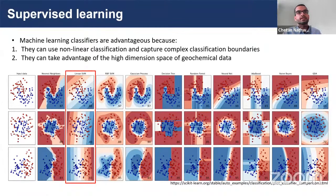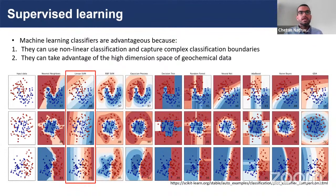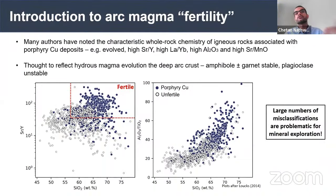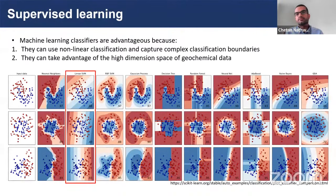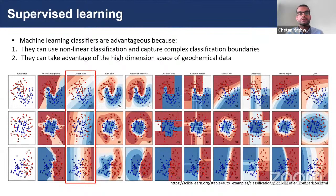Another advantage of machine learning classifiers is they can take advantage of the high-dimensional space. When collecting geochemical data, we often have many elements, yet traditional plots only utilise a few of them. In reality you might have 10, 20, 30, 40, or 50 elements, and you could potentially make a better classification boundary in high-dimensional space, incorporating more of the variance of your dataset.